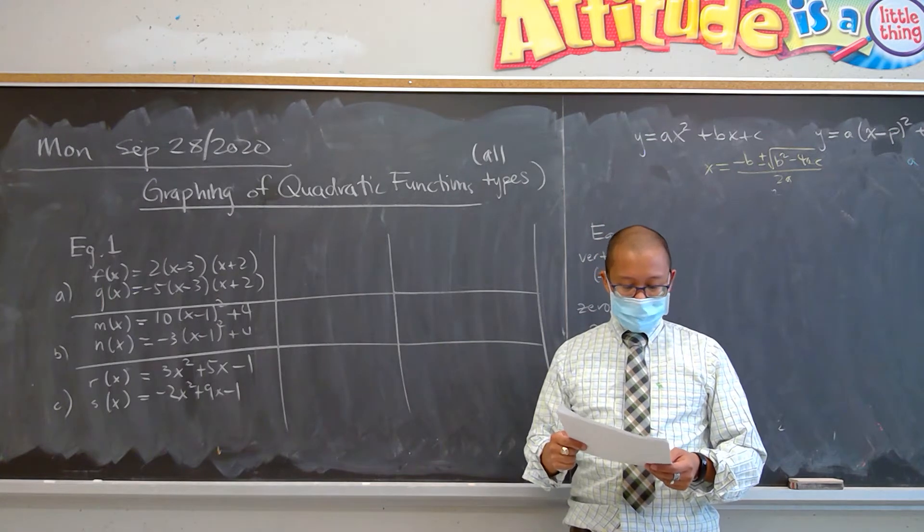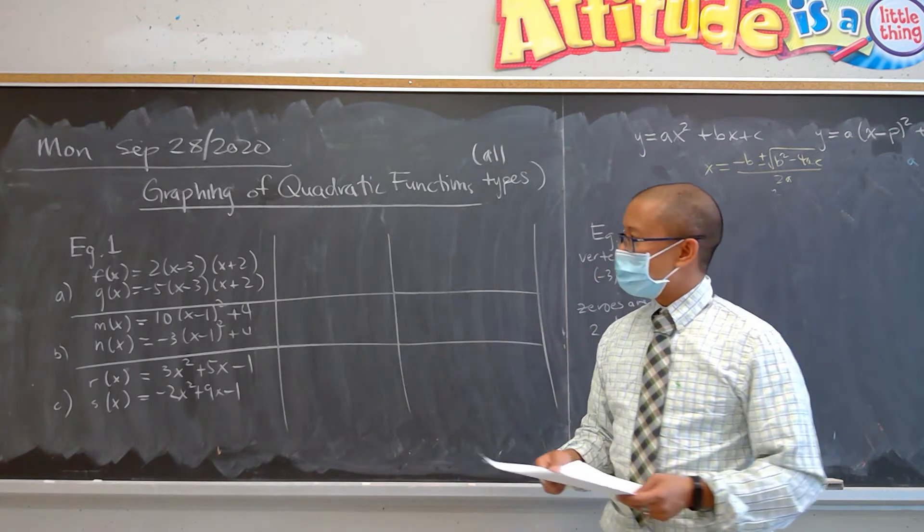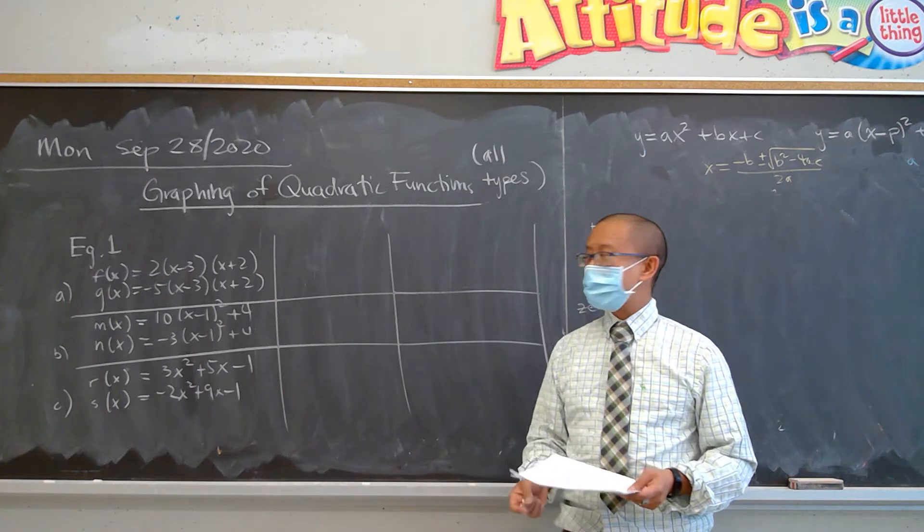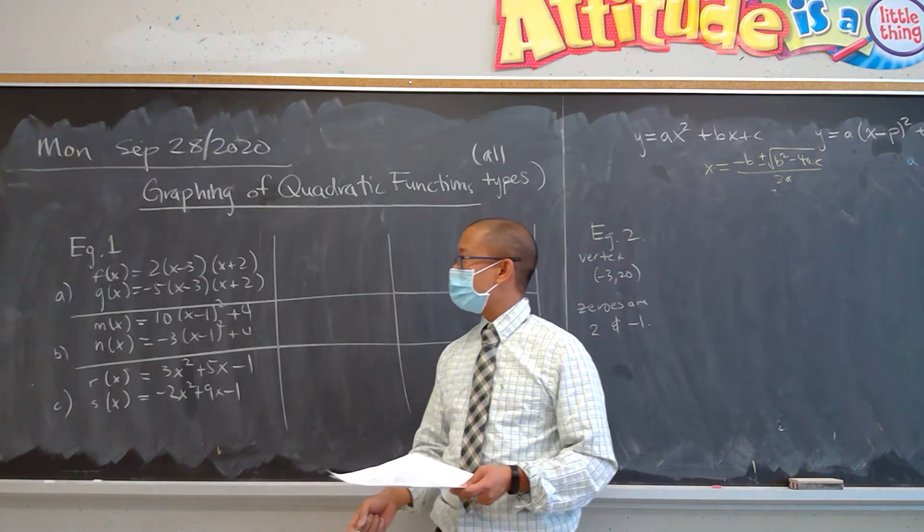We have a table of values here, for example, of families of quadratic functions. For example a, a lot of you would look at the function f(x) equals 2 times (x minus 3) times (x plus 2).